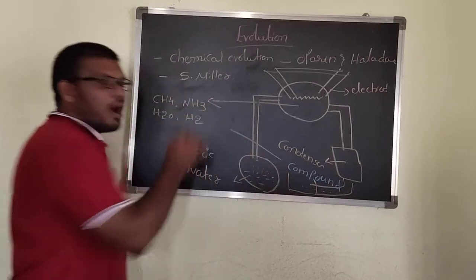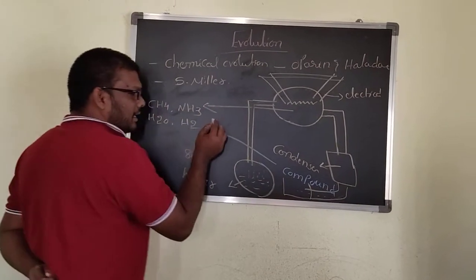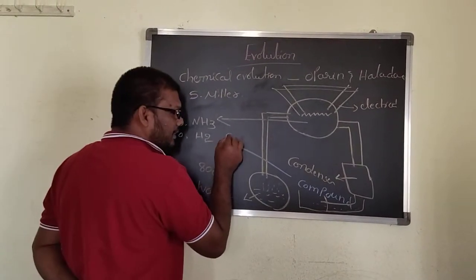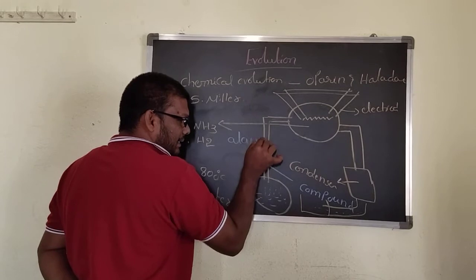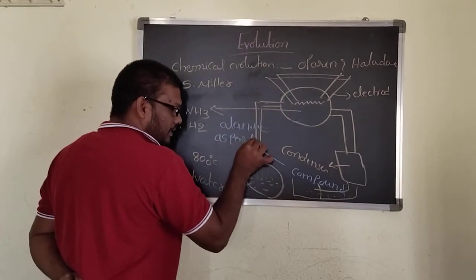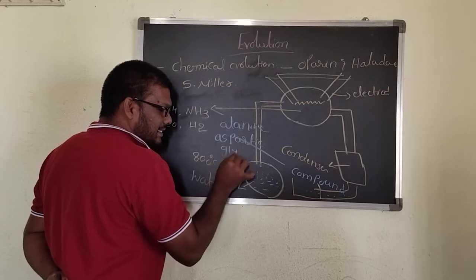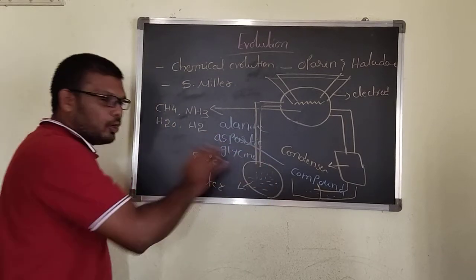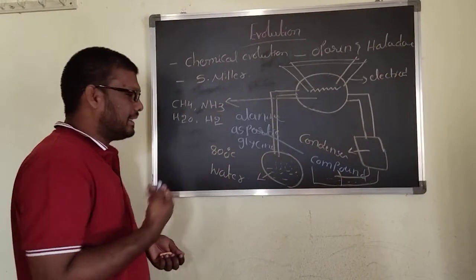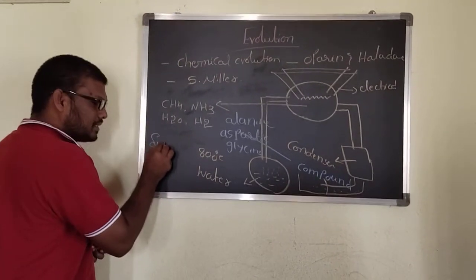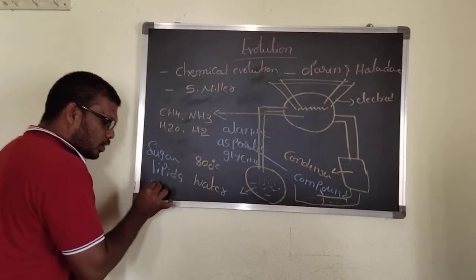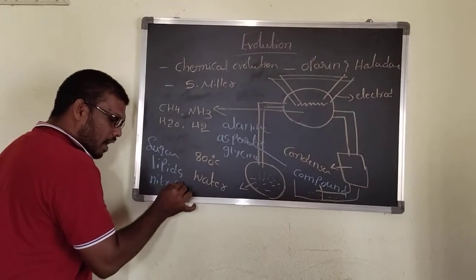The first compounds are sugars, and also they include amino acids — that is alanine, aspartic acid, and glycine are formed. When you repeat the experiment, you can get sugars, lipids, and nitrogenous compounds.